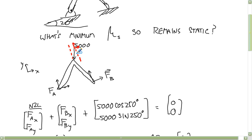You can think of it as this is 20, and so that's negative 5,000 cosine 20. You could do it that way, or you could do it as 5,000 times cosine of 250.